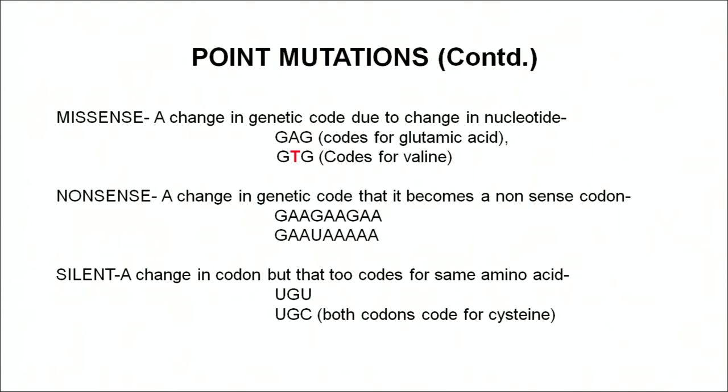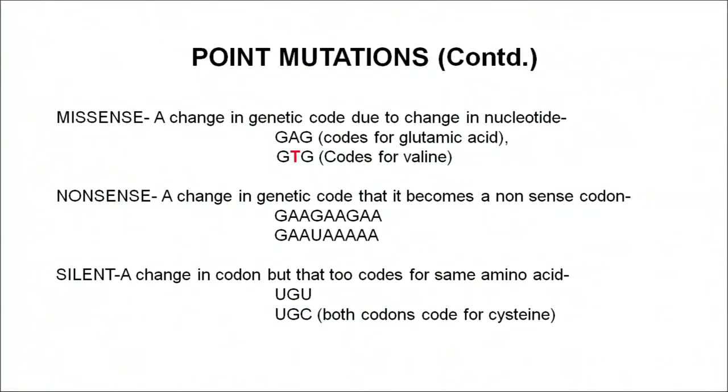Nonsense mutation is when a change in the code results in a nonsense codon. For example on mRNA, G-A-A-G-A-G changing so that UAA - a termination codon - is formed, causing the polypeptide chain to stop synthesizing and a proper protein not being formed. Silent mutation is when a change in a codon occurs but it still codes for the same amino acid. Since genetic code is degenerate, UGU changed to UGC both code for cysteine, so there is no effect on the structure of the polypeptide chain.